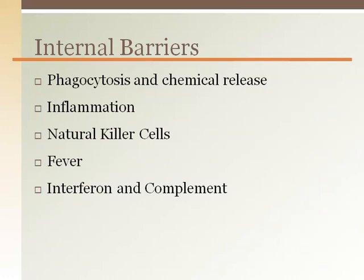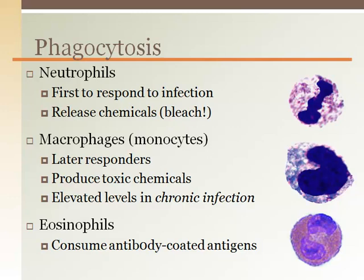The internal barriers of innate immunity or nonspecific defense include a number of mechanisms to eliminate antigens once they have entered our bodies. These mechanisms are immediately available and are not targeting a specific antigen or disease versus another disease, which is why they are still classified as innate or nonspecific. Phagocytosis is the process when a cell such as a neutrophil, macrophage, or eosinophil encapsulates and consumes an antigen or particle.